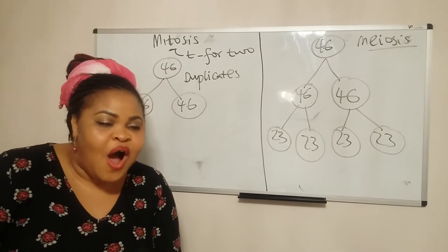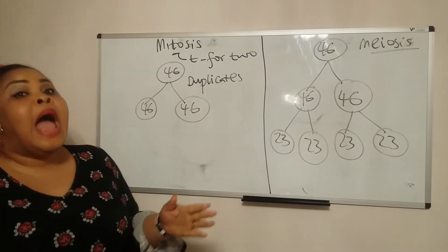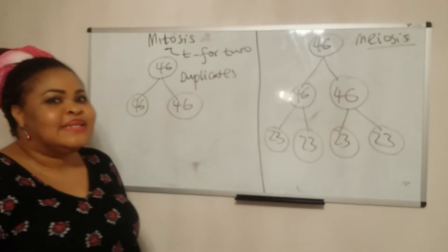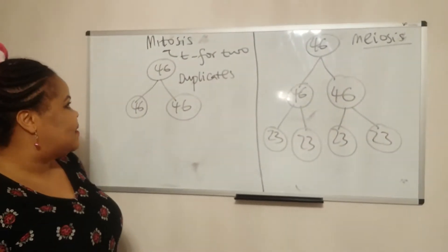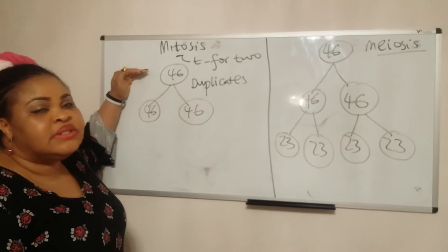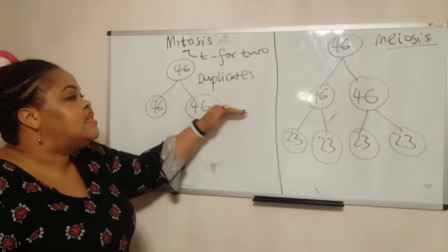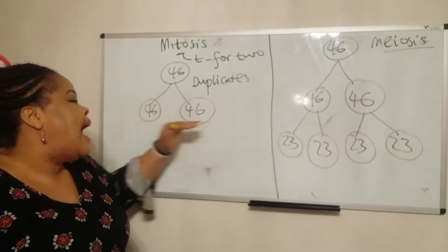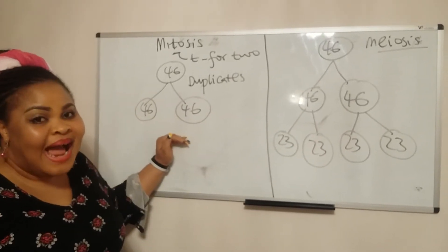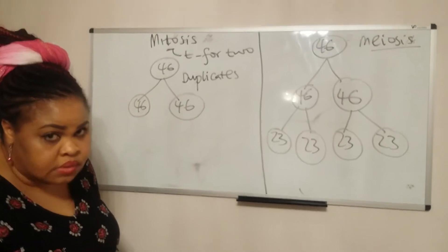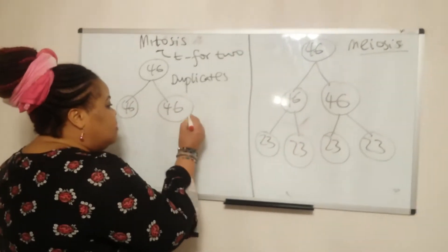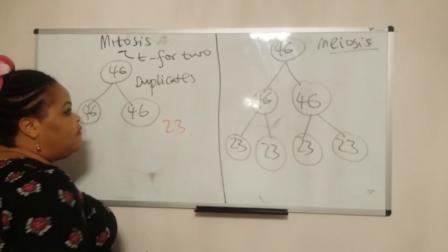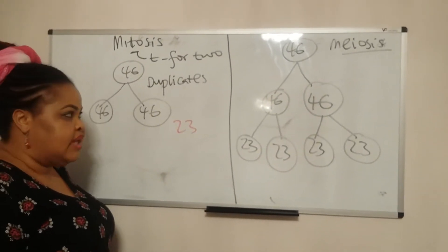I'm going to compare mitosis and meiosis quickly. In mitosis, you start with 46 cells, go through the stages I covered in my last video on mitosis, and end up with 46 46—diploid cells. This means you have 23 pairs for a total of 46 chromosomes in human cells.